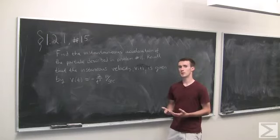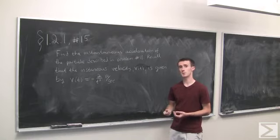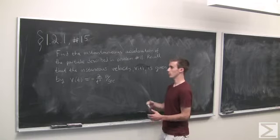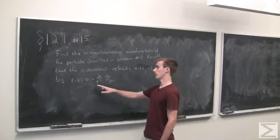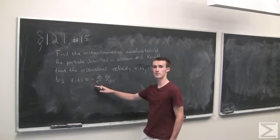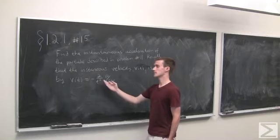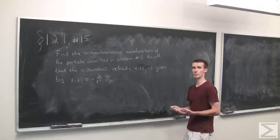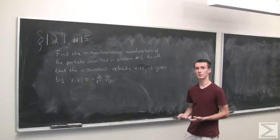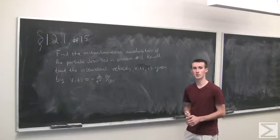Instantaneous acceleration is just the instantaneous rate of change of the velocity with respect to time. So if you recall in problem number 11, we found that the function modeling velocity of the particle is given by minus 2 over t cubed feet per second. So now we're going to apply the same techniques that we did in problem 11 to find the instantaneous acceleration.